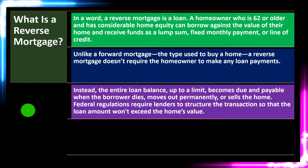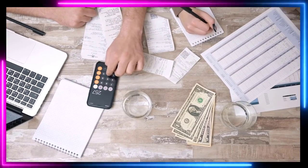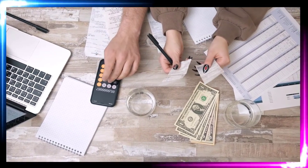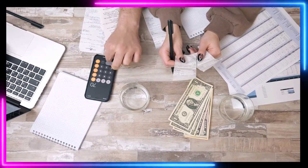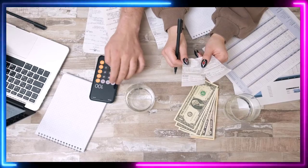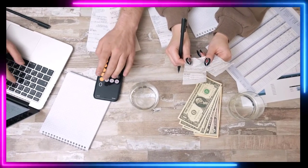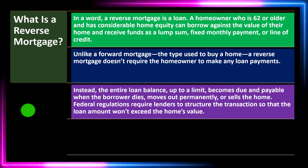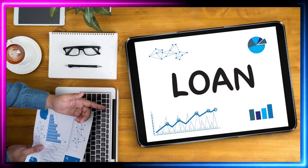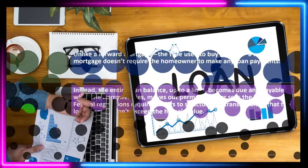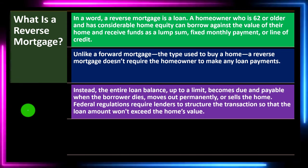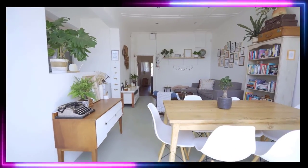Instead of lowering the loan balance as in a normal mortgage — where paying off the loan increases your equity — in a reverse mortgage the loan balance goes up, meaning the difference between the home value and the loan gets smaller instead of bigger. You can think of it as reversing that process: the gap between the value of the home and the loan balance decreases in reverse fashion.